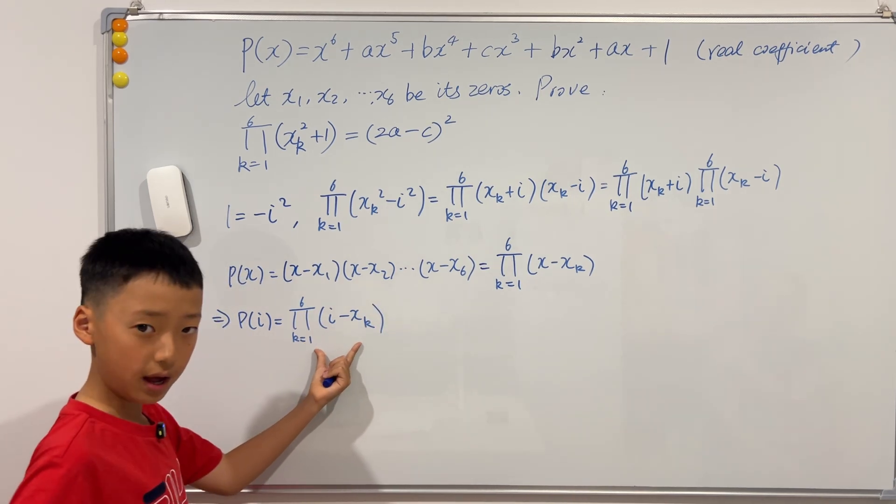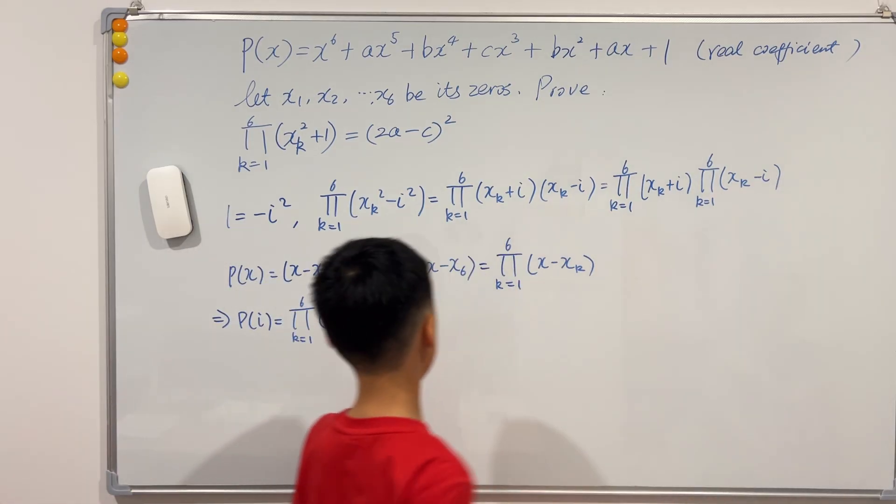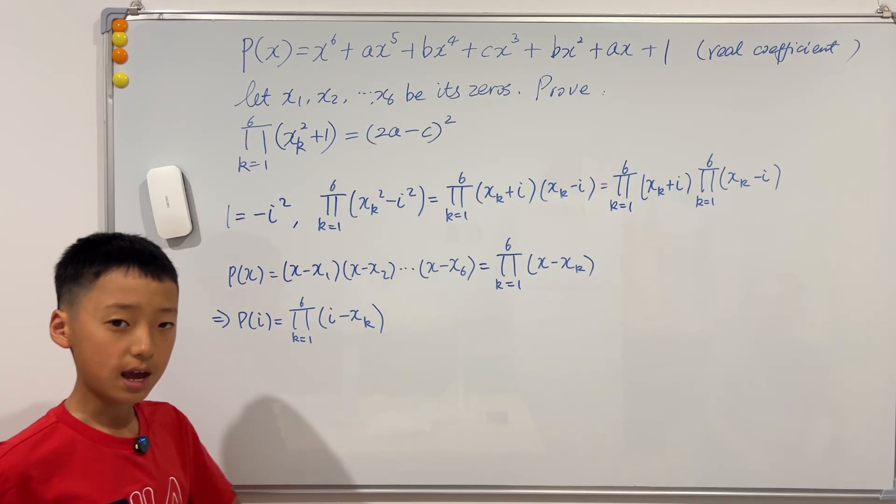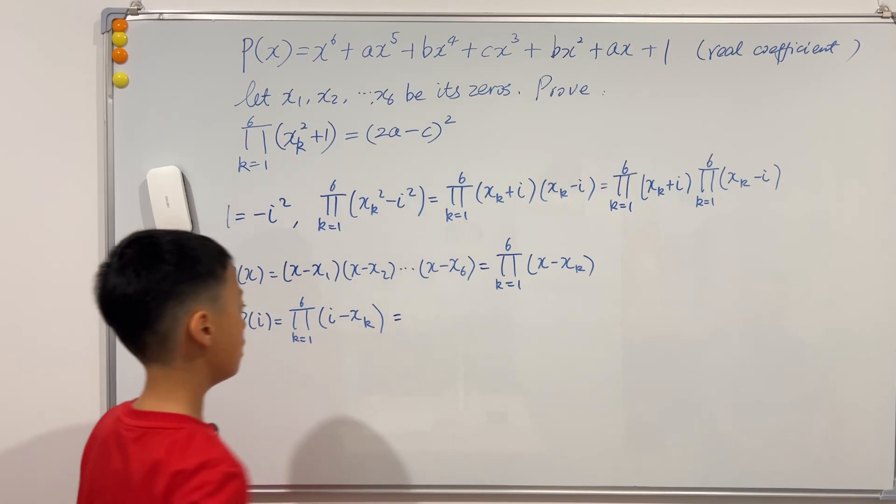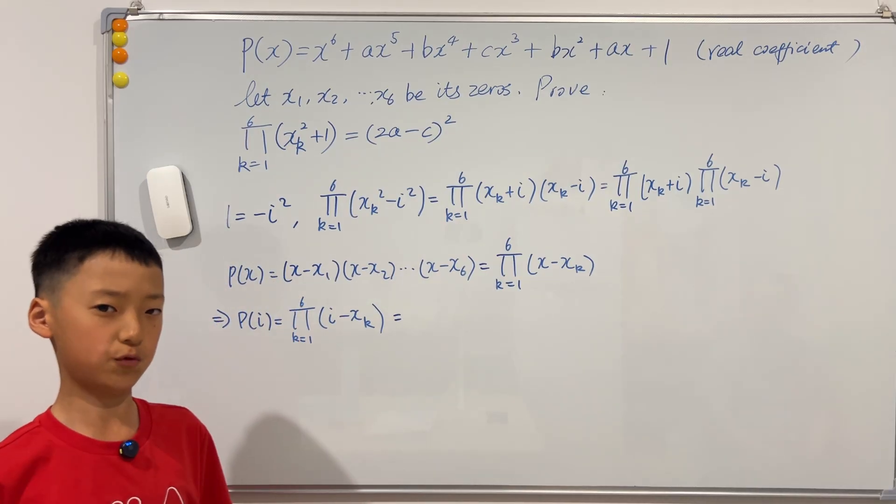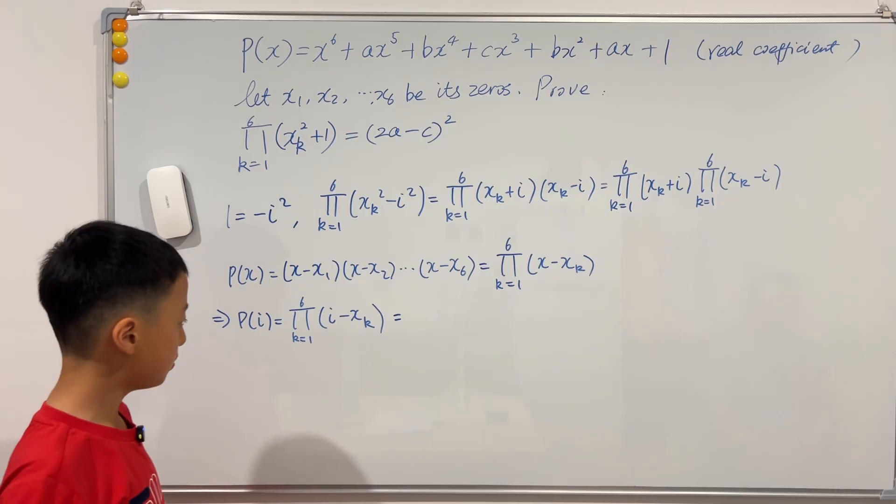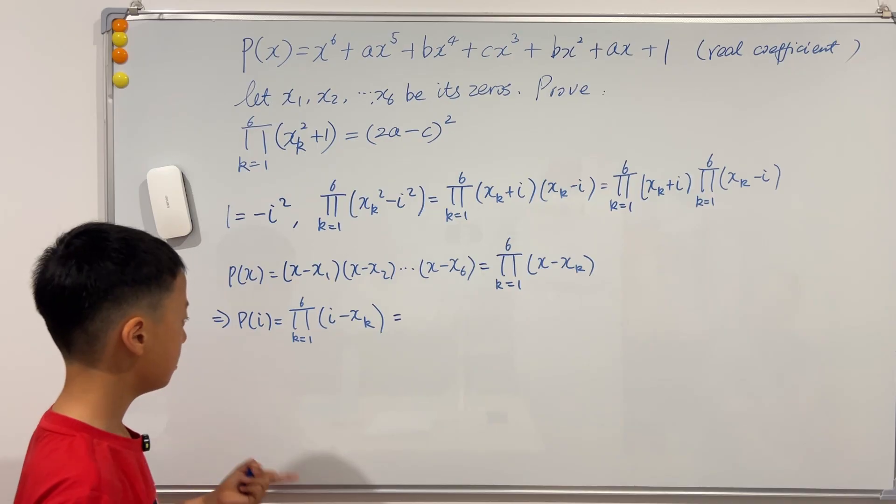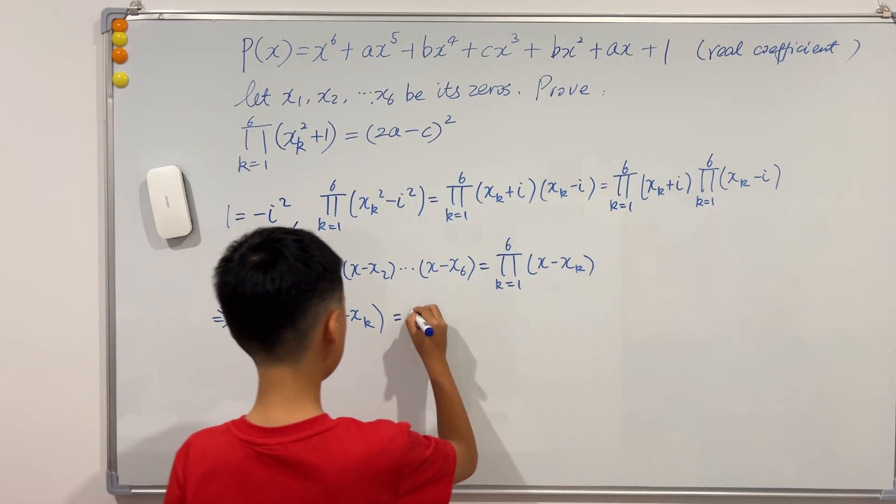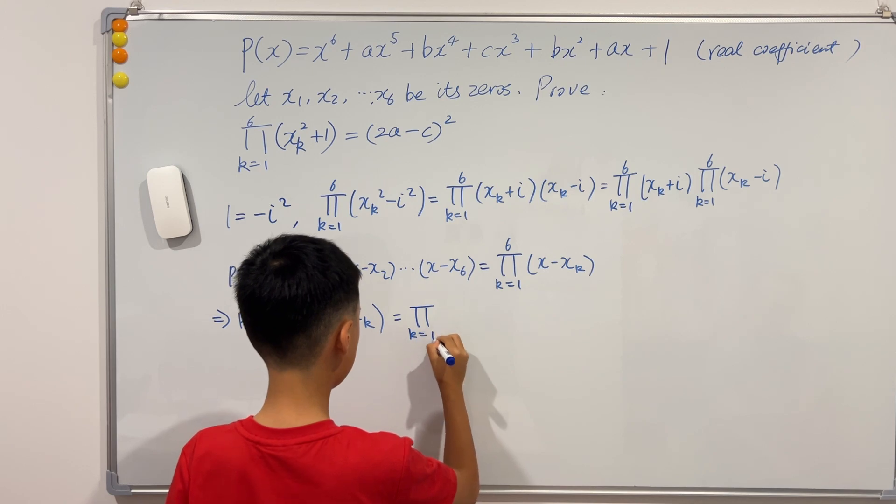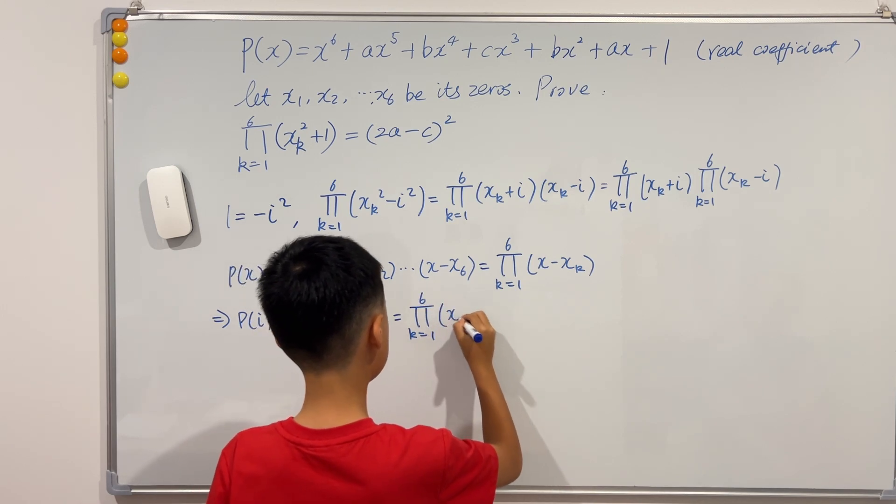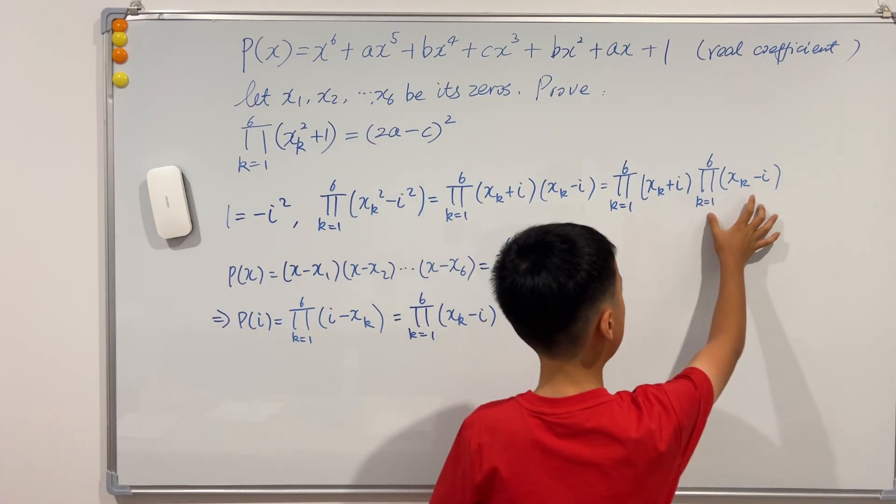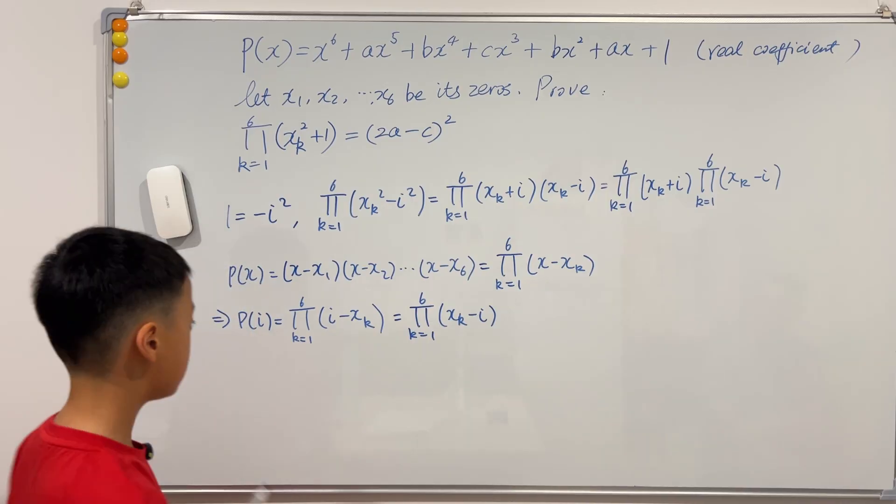So we see that this capital pi is very similar to the second capital pi, but it's not exactly the same. What it's missing is a negative one. But we can't just multiply by one negative one because there are six brackets. So we need to multiply by six negative ones, but negative one to the power of six is just one, so it stays the same. So this is just equal to capital pi, k equals one to six, of x_k minus i. Nothing else changes. So we see that this second capital pi is just P of i.